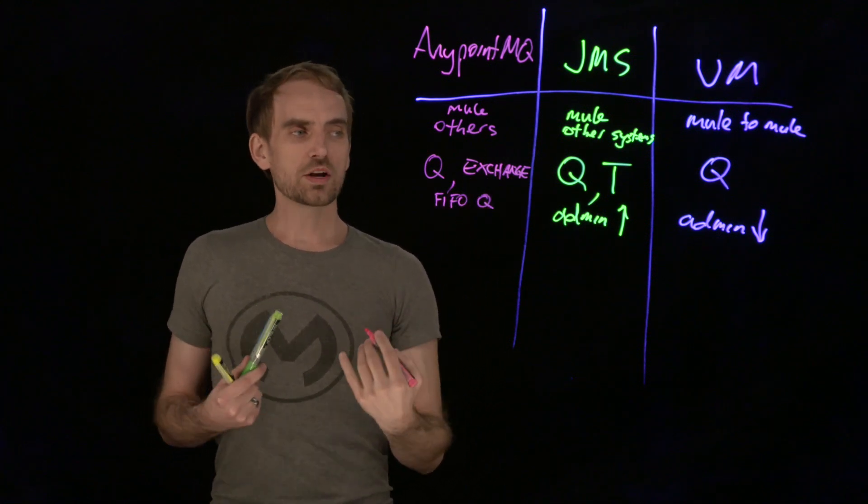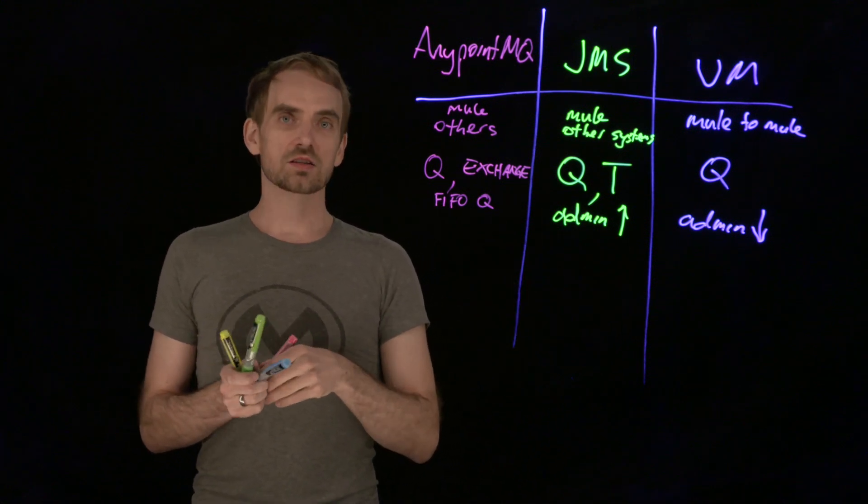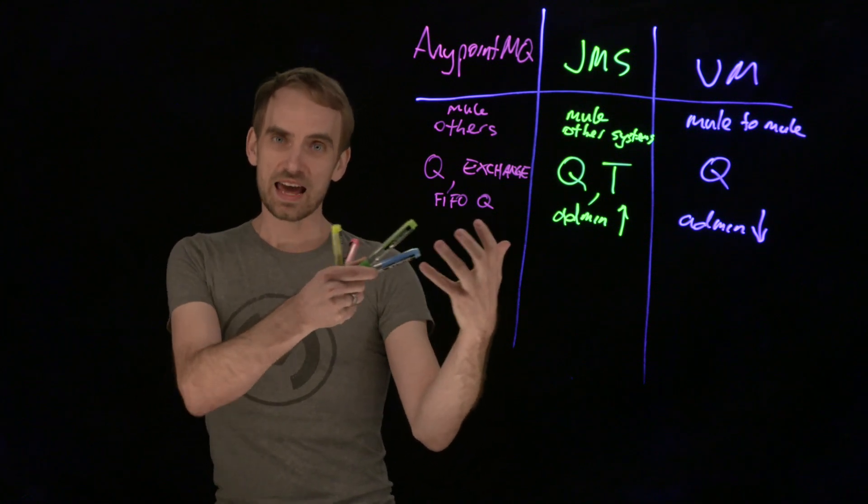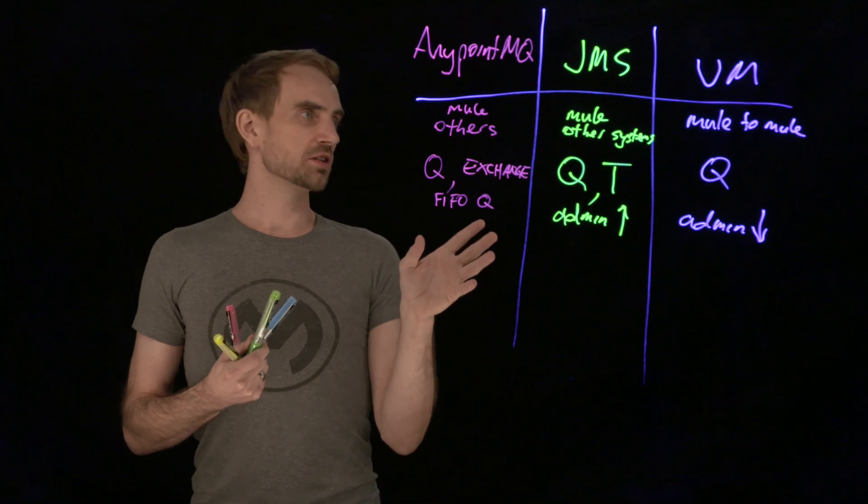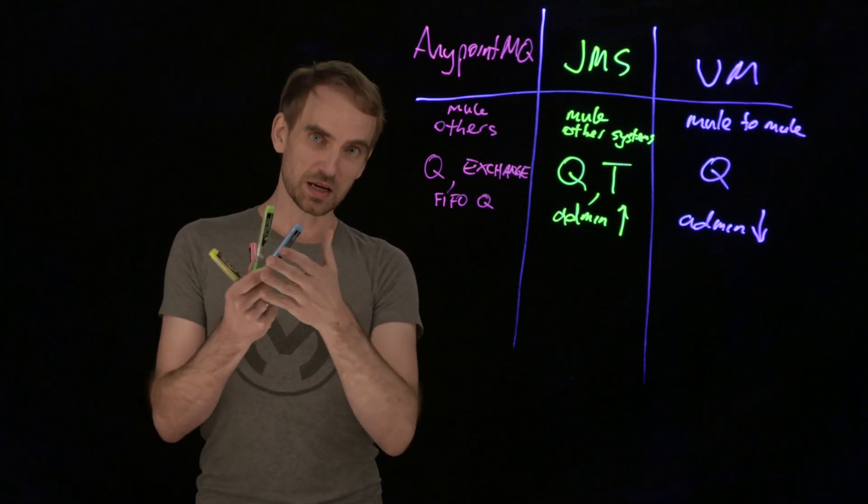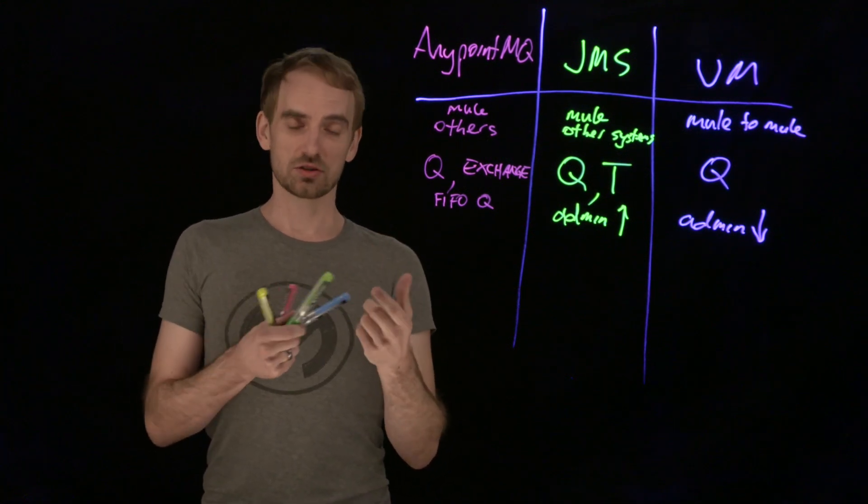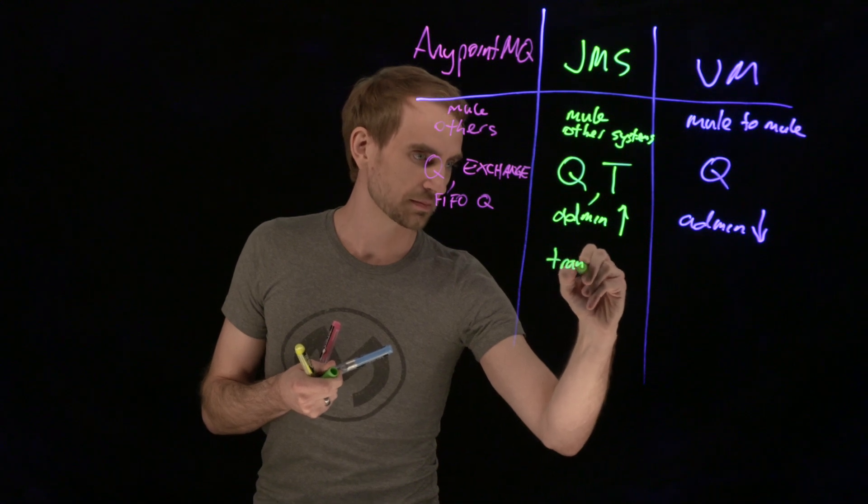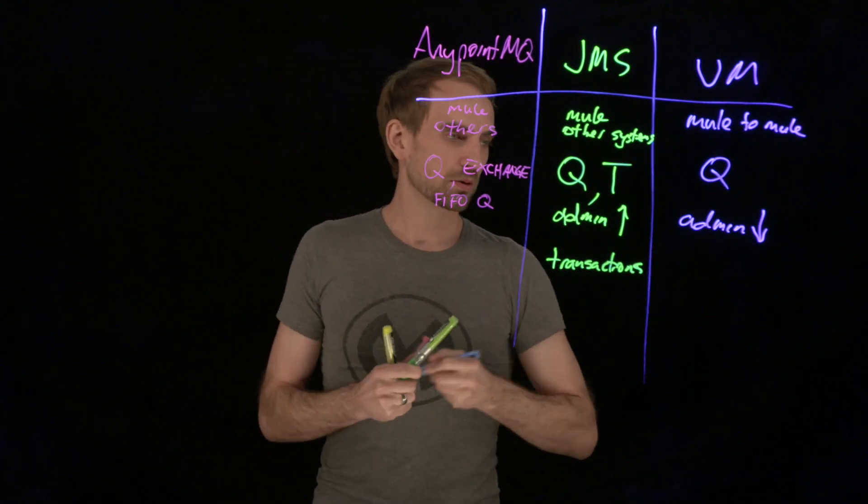Now, let's talk about when you're reading a message off one of these options. There are some different ways that you can get some quality of service around that consumption. The way that JMS and VMs can support not removing the message off the queue until it has been dealt with, you've got the option of using a transaction manager to do that. It can support transactions. And VMs can also support transactions.